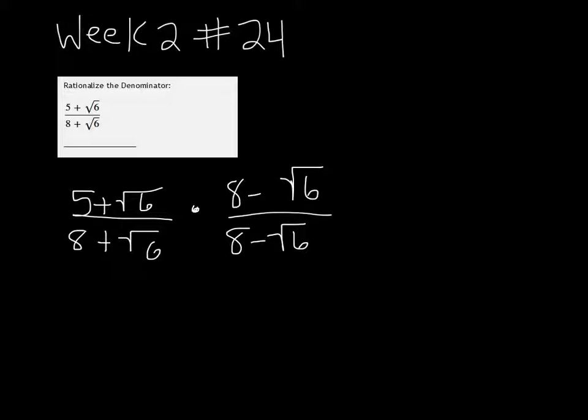Alright, so 8 times 5 is 40. And 5 times negative root 6 would be minus 5 root 6. And root 6 times 8 would be plus 8 root 6.